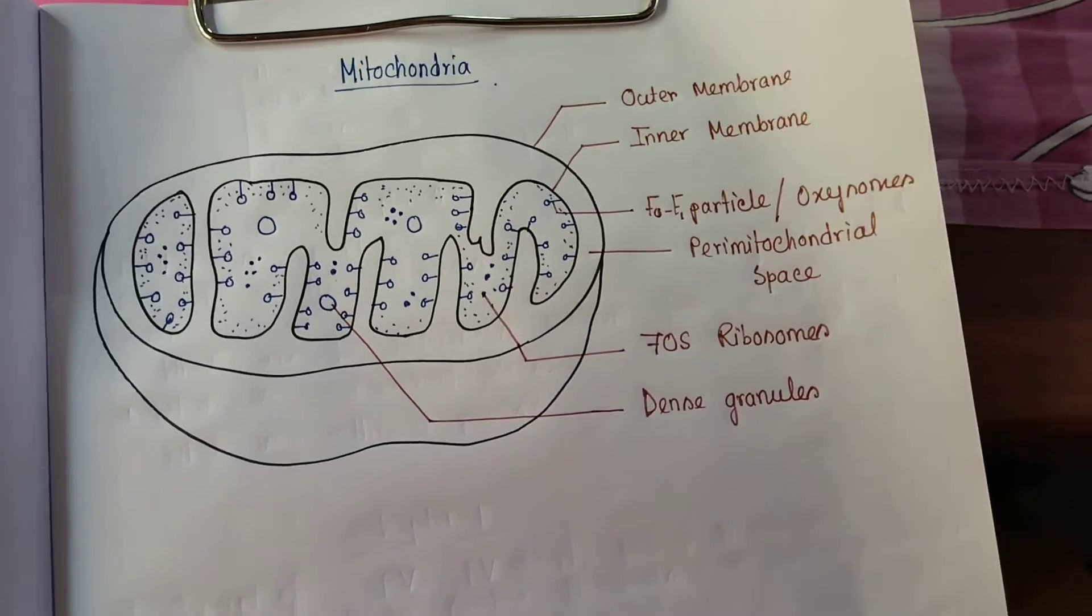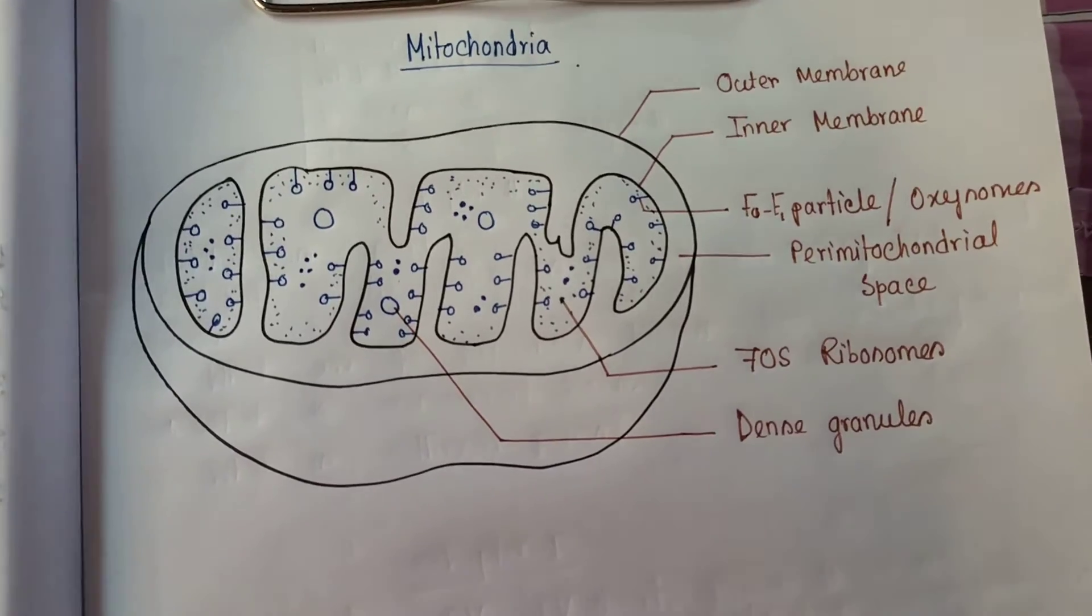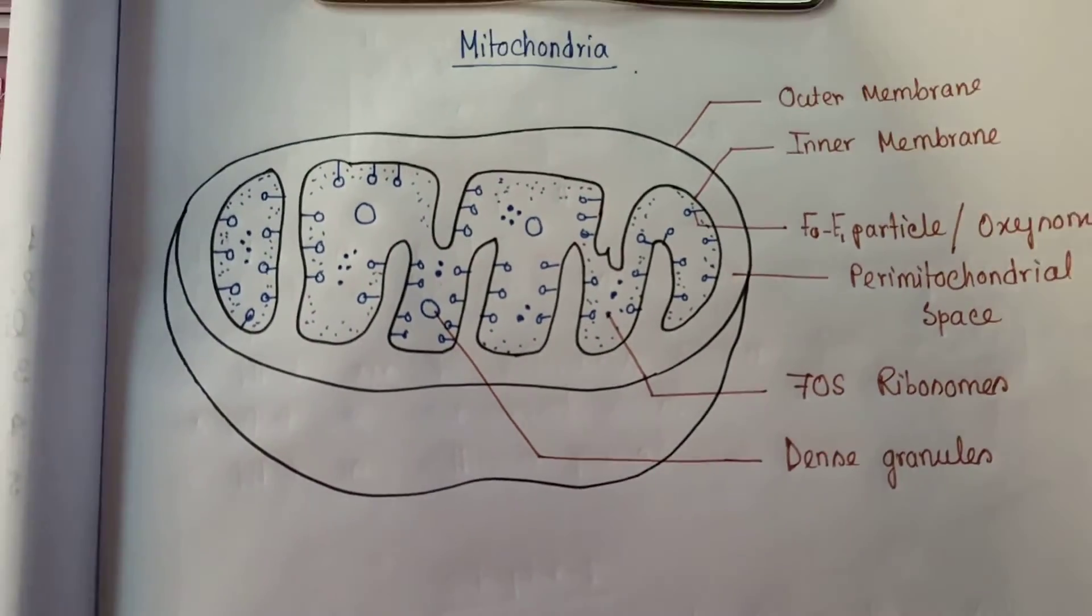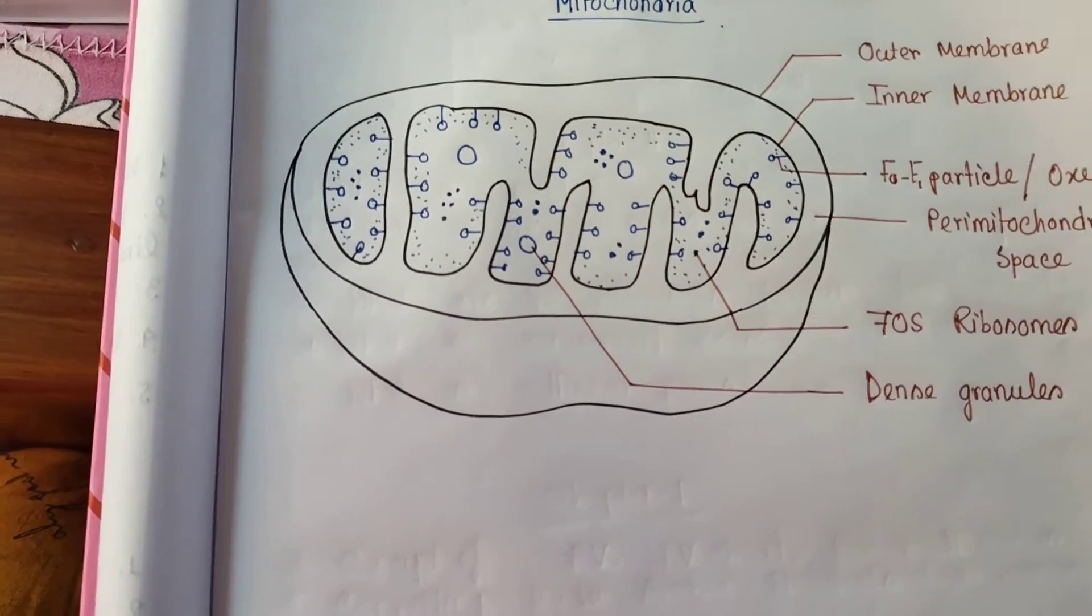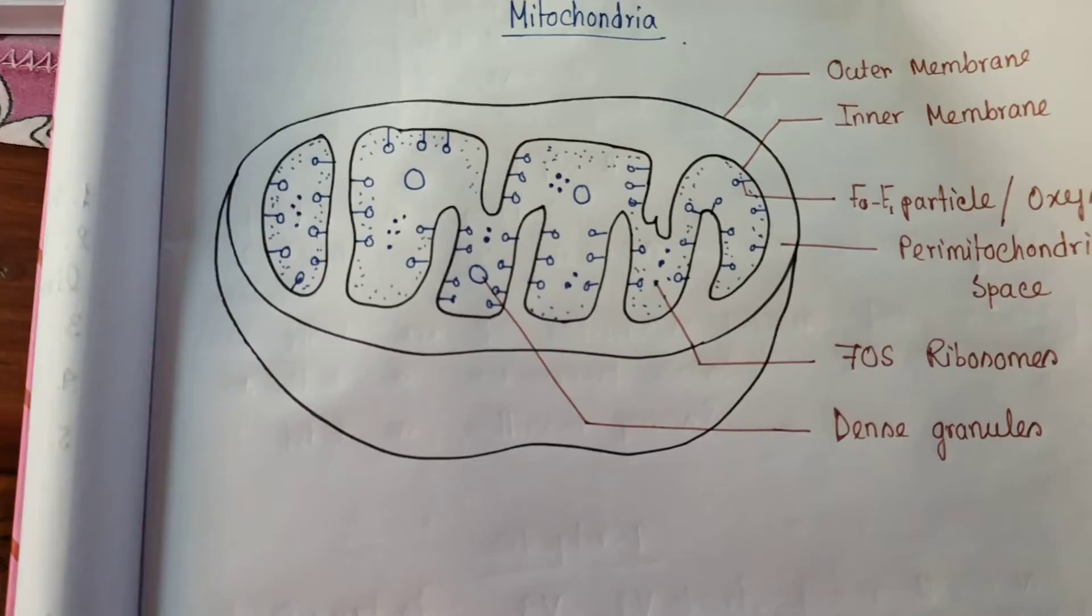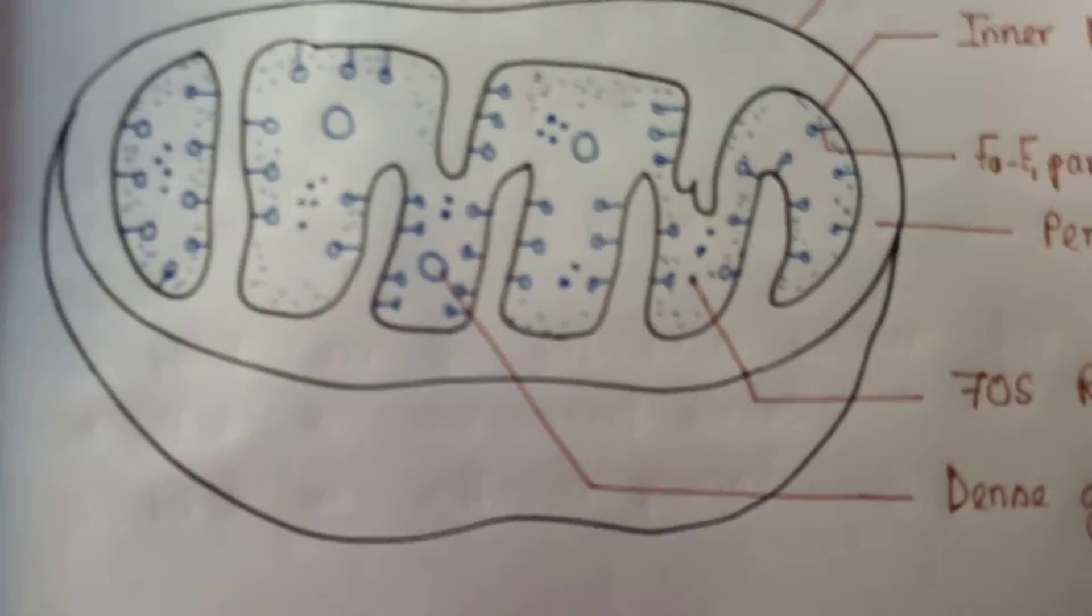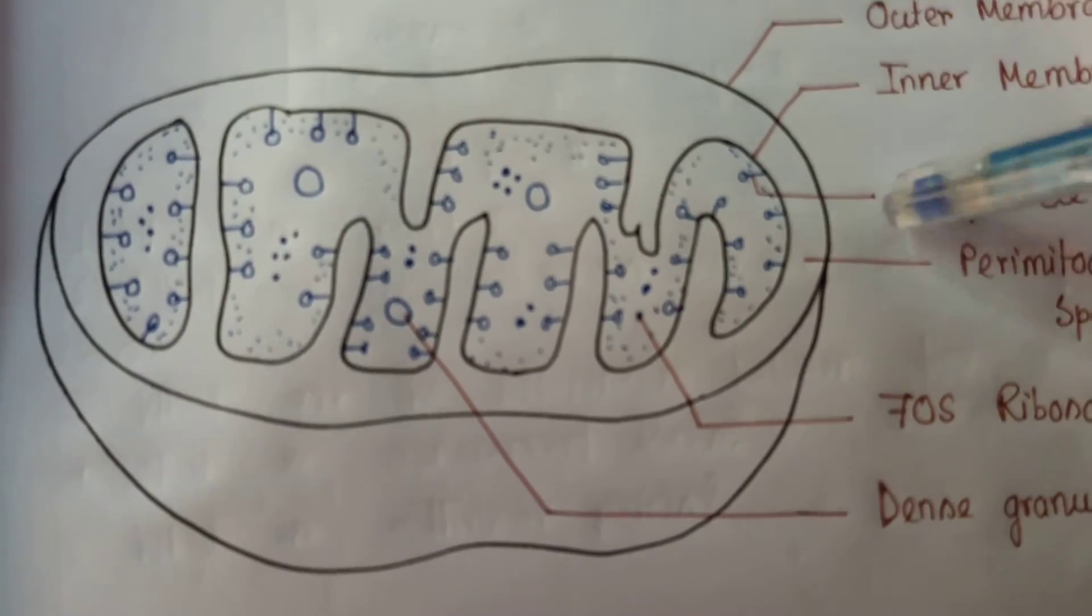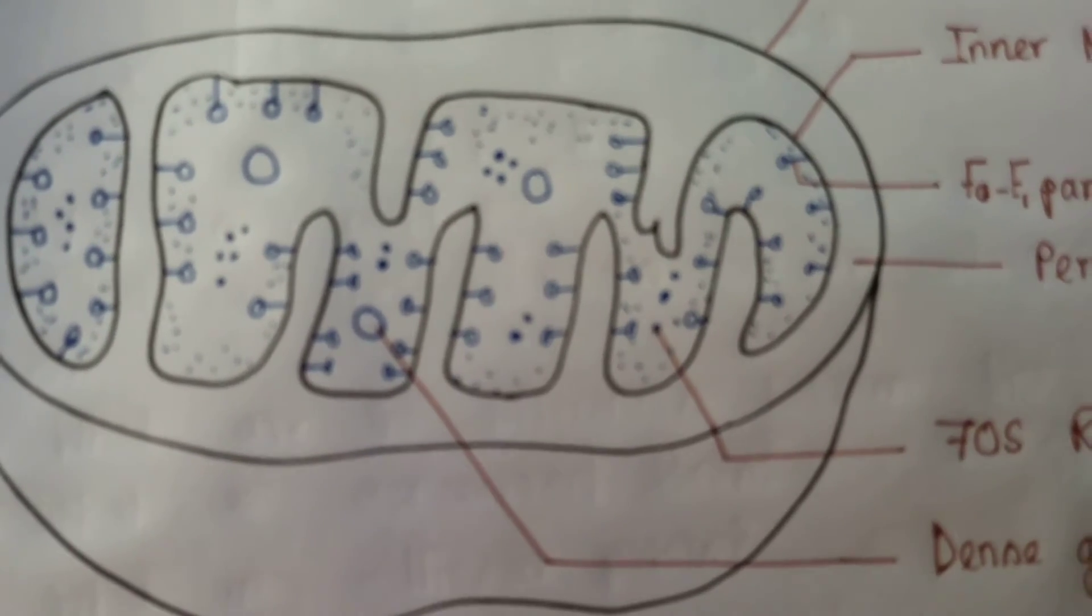Good afternoon students. This video is on mitochondria. Mitochondria is a double membrane-bound cell organelle. It is very prominent when found under microscope if we study a cell. Its shape can be of different types but mainly it is sausage-shaped, found in all cells.